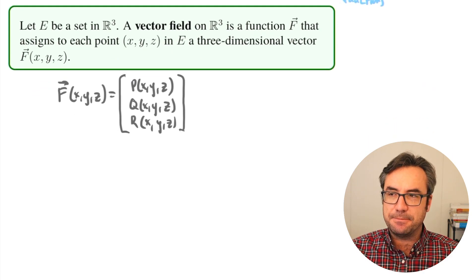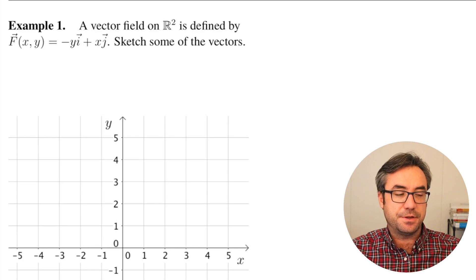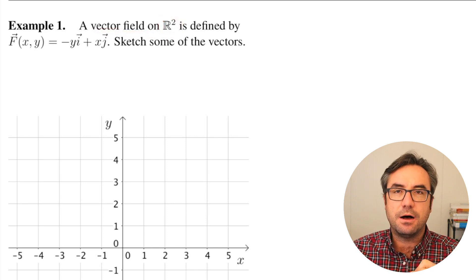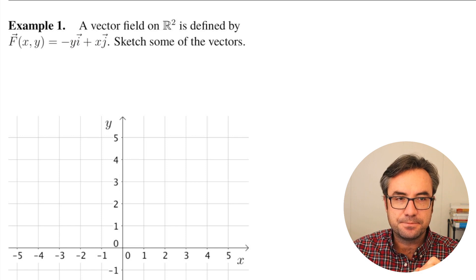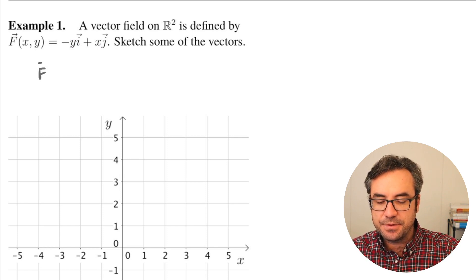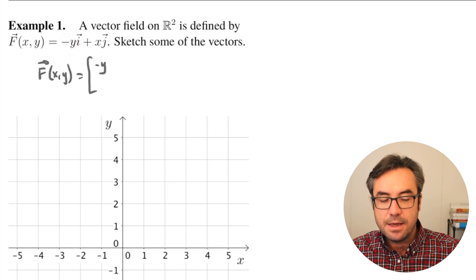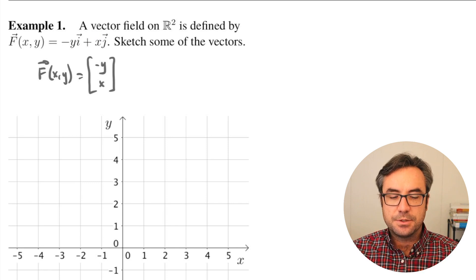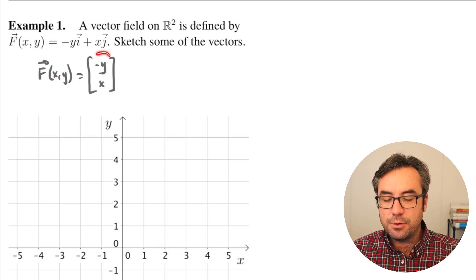Let's look at an example of a two-dimensional vector field. Here's what it might look like: a vector field defined on the entire xy-plane, all of R2, given by f(x, y) = −y·i + x·j. In column vector notation, the component function for the x coordinate is −y, and the component function for the y coordinate is x. So what this function is doing is taking each point on the xy-plane and producing a vector as the output.